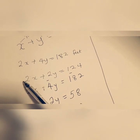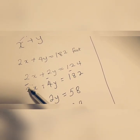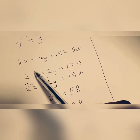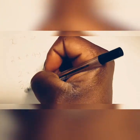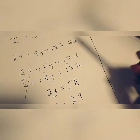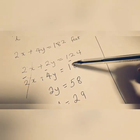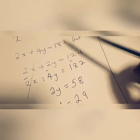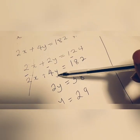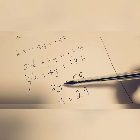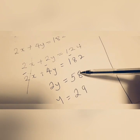So here you have a positive 2 and a positive 2 which is the same signs and so you subtract to eliminate that. What's 2x take away 2x, that would be 0, so we can knock that off straight away. Now because you have done subtraction there, you want to do the same for the other bits. So if you go from the bottom to the top, you have 4y take away 2y which is 2y. And if you do 182 take away 124, you have 58.